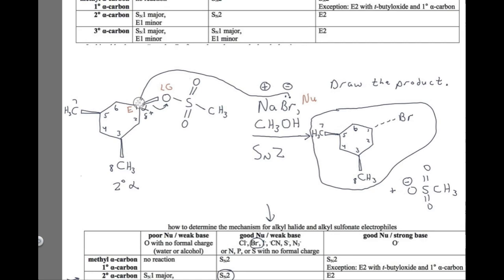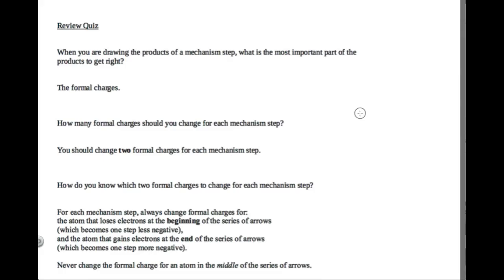For example, in the previous problem, we changed the charge on bromine because it was at the beginning of the series of arrows, and we changed the charge on the oxygen because it was at the end. Bromine changed from negative to neutral because it was losing electrons; the oxygen changed from neutral to negative because it was gaining electrons. Notice we never change the formal charges for atoms in the middle of the series of arrows — carbon 1 was in the middle, so its formal charge stayed 0. An atom in the middle gains electrons from one arrow but loses them to the next, so the changes cancel. Formal charges are the most important factor in organic chemistry, so make sure you always change two formal charges for every mechanism step.